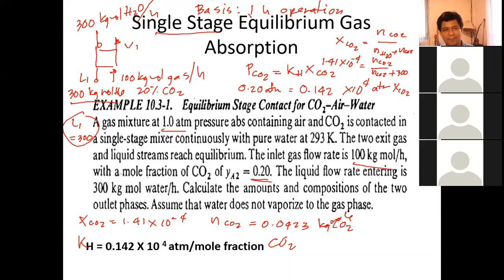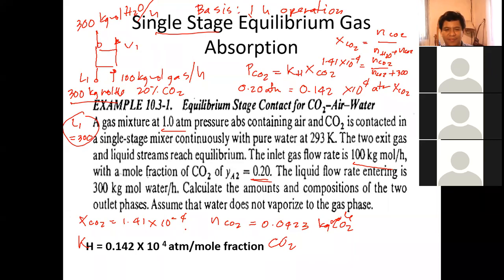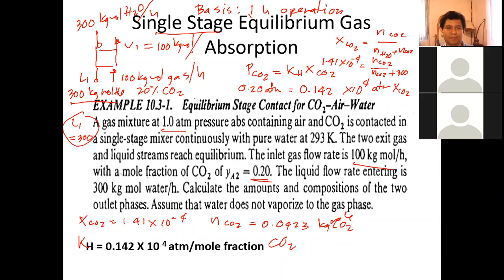Since L1 is practically 300 kilogram-mole per hour, doing an overall mass balance: 300 kilogram-mole water in, 300 kilogram-mole water out, 100 kilogram-mole gas in — so B1 is also approximately 100 kilogram-mole per hour. If you want an exact value, it's about 99.96, but practically it's 100. The concentration of CO2 in the liquid is 1.41 × 10⁻⁴.